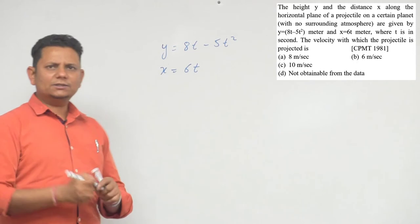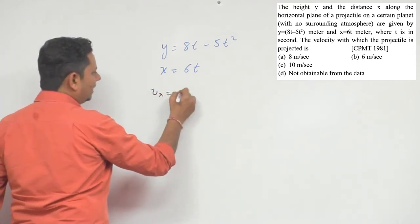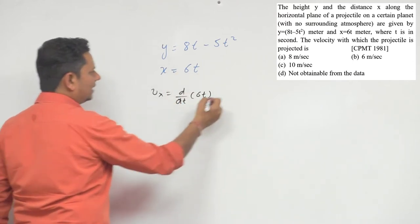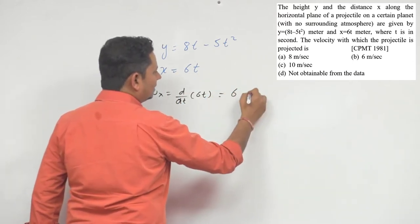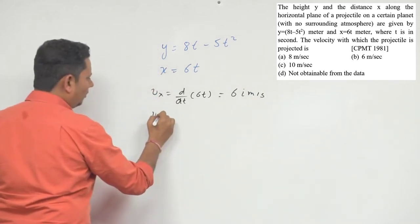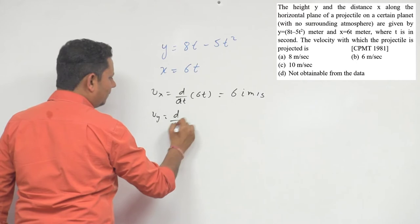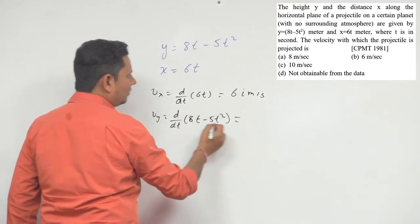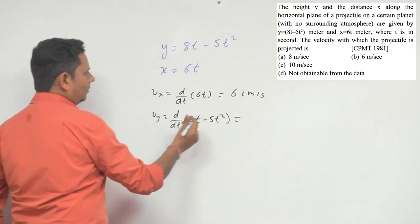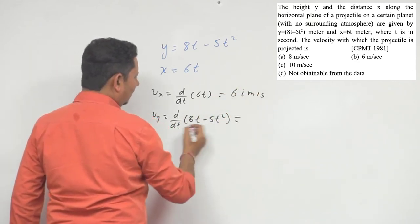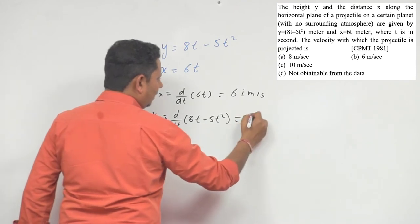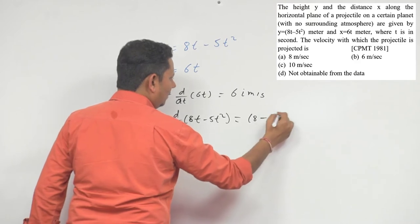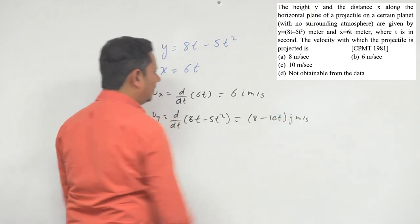We can say vx will be equal to d by dt of 6t. If we differentiate this we get 6. Similarly vy equals d by dt of 8t minus 5t square. Differentiating this gives us 8 minus 10t.